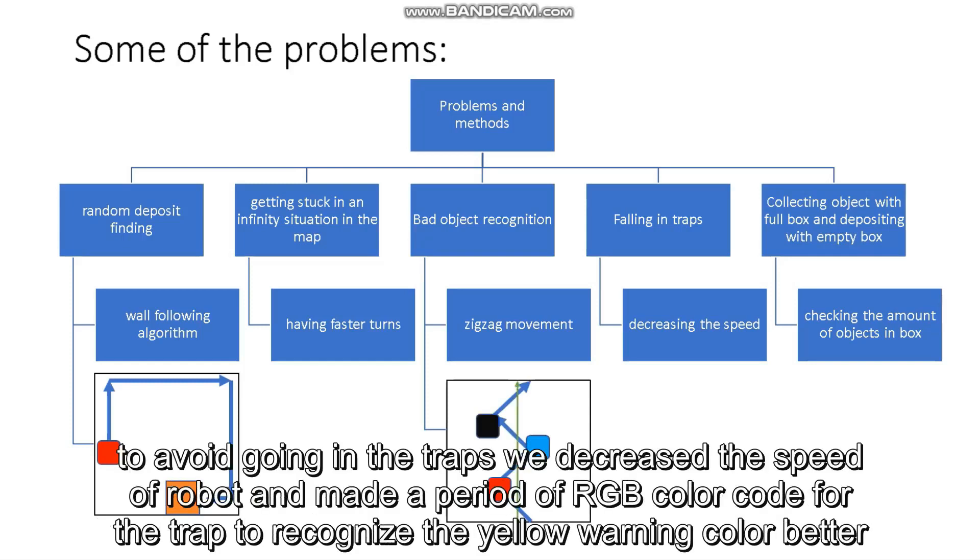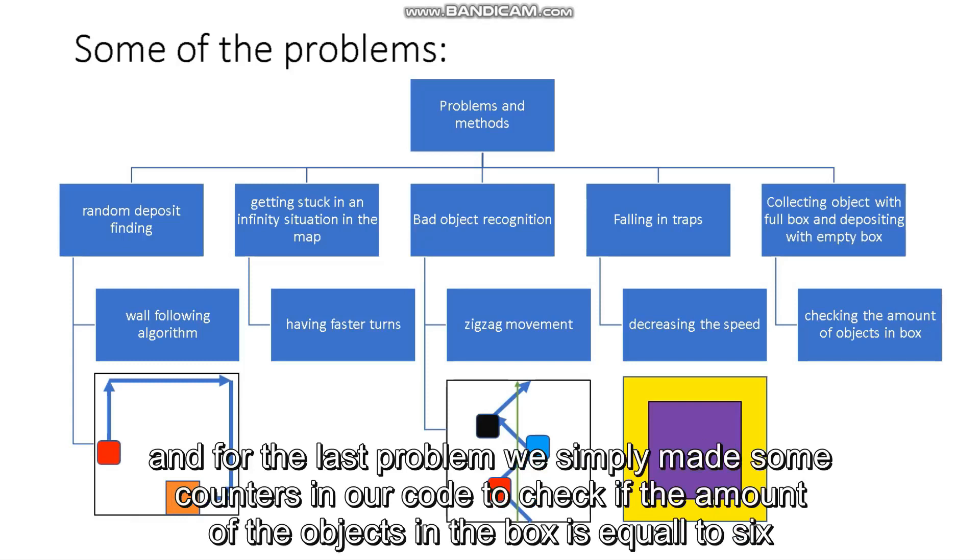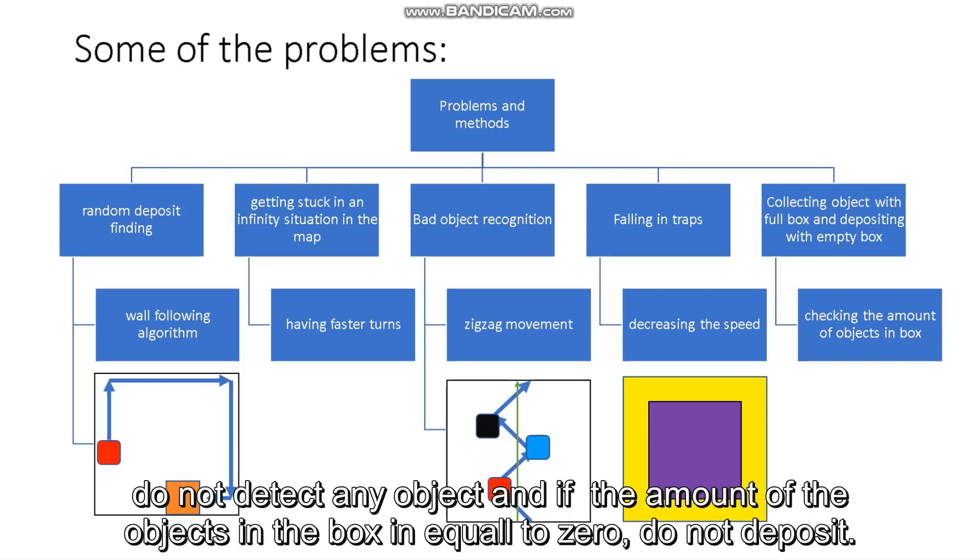To avoid going in the traps, we decreased the speed of the robot and made a period of RGB color code for the trap to recognize the yellow warning color better. And for our last problem, we simply made some counters in our code to check if the amount of objects in the box is equal to 6, do not detect any objects, and if the amount of objects in the box is equal to zero, do not deposit.